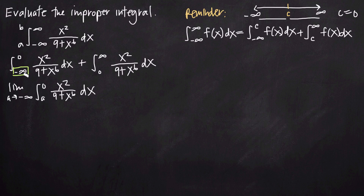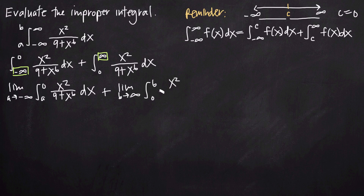We can't just plug in an infinite value to our function — technically we have to plug in the constant and then take the limit as that constant approaches negative infinity. For case type 1, we do a similar thing: remove the problem limit of integration, positive infinity, and say the limit as b approaches positive infinity of the integral from 0 to b of x squared over 9 plus x to the 6th dx. Now we have constants a and 0, and 0 and b, so we have no issue there.